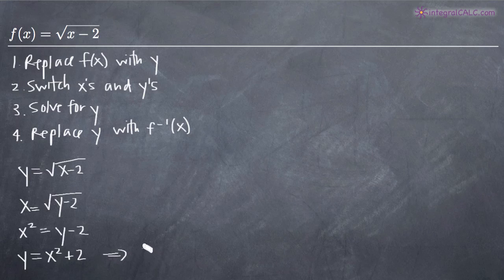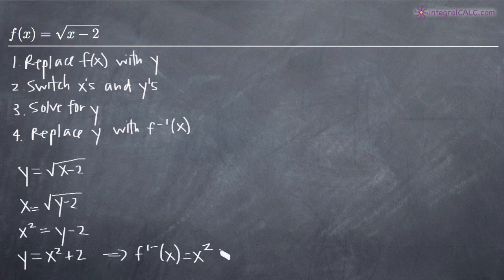So instead of writing y, we write f⁻¹(x) = x² + 2, and x² + 2 is the inverse of √(x-2).